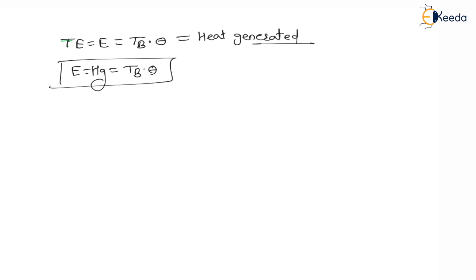Now, what are the dynamic equations? For linear motion, the final velocity V = U + at. Similarly, for angular motion, the final angular velocity omega 2 = omega 1 + alpha·t, which gives alpha = (omega 2 − omega 1) / t — that is, alpha is the change in angular velocity with respect to time.